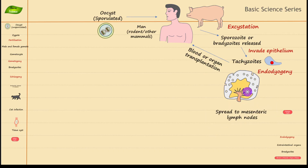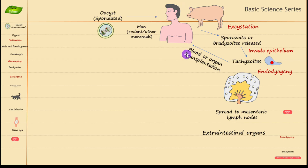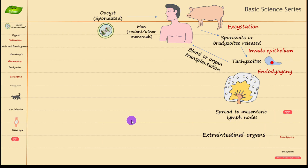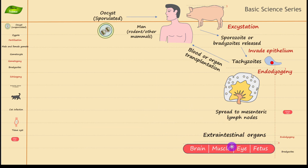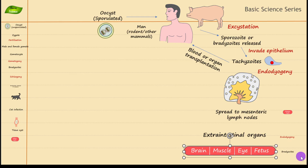The spread to the lymph node is very dangerous because from there the parasite can travel to various different parts of the body, including the brain, the eye, and it can also go to the fetus in pregnant women, which is extremely dangerous. From the lymph nodes they can move to extra-intestinal organs.